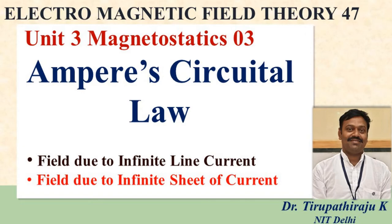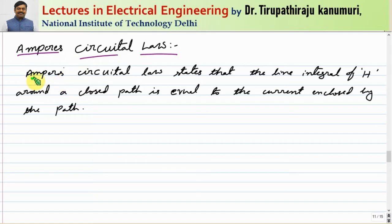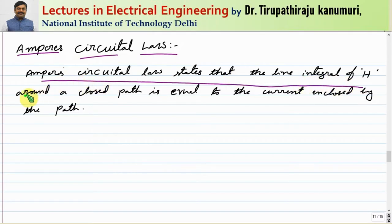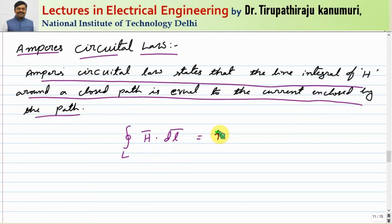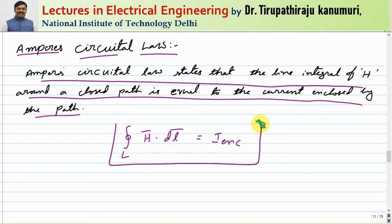Hi y'all, today we are going to discuss Ampere's Circular Law. Ampere's Circular Law states that the line integral of H around a closed path is equal to the current enclosed by the path. This can be represented as the closed line integral of H dot dl, which equals the current enclosed by the particular path. This is the statement of Ampere's Circular Law.